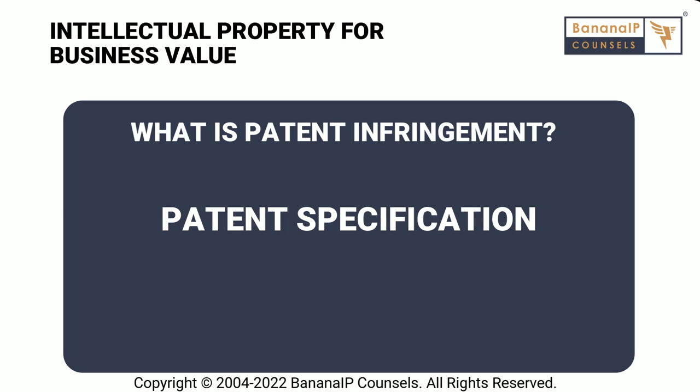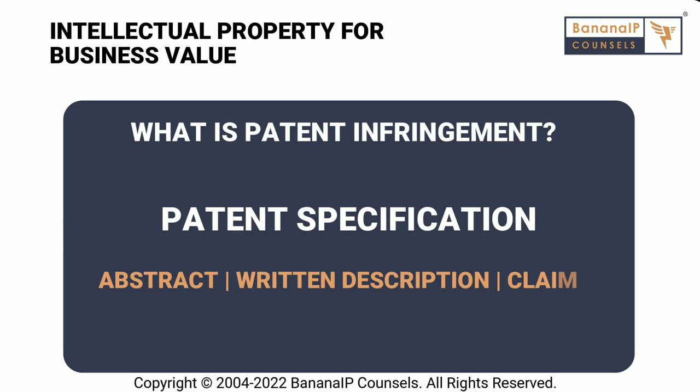A patent specification will include different parts. There will be a part called abstract, where you briefly write about what your invention is. Then there will be a part called written description. You can also submit documents if you want. Then there will be a part called claims. Each of the claims is one sentence and each sentence talks about what exactly the invention is. If you have multiple facets of the invention, you will have multiple claims. If you have only one facet, you will have only one claim. So what you get a patent over finally is with respect to what you write in this claim about what your invention is.